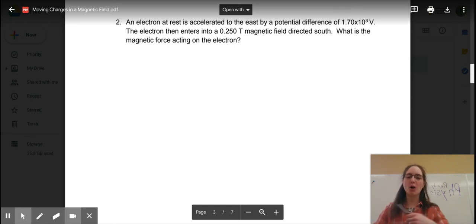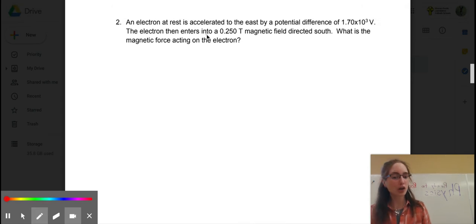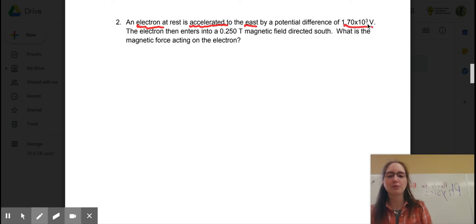And we're back. Part two of this particular lesson. I think we've got at least some of the tech problems figured out. We'll go from there. All right. So the next piece we're going to look at is your question number two in the same set of notes here. So we've got this guy here, a more complicated question. So an electron at rest is accelerated east by a potential difference of 1.7 times 10 to the power of three volts.